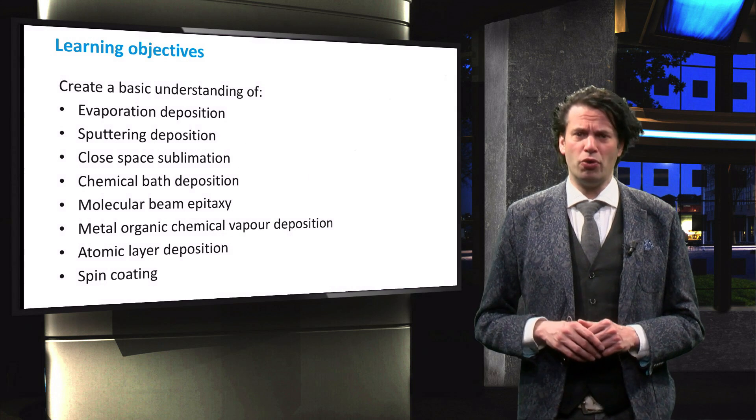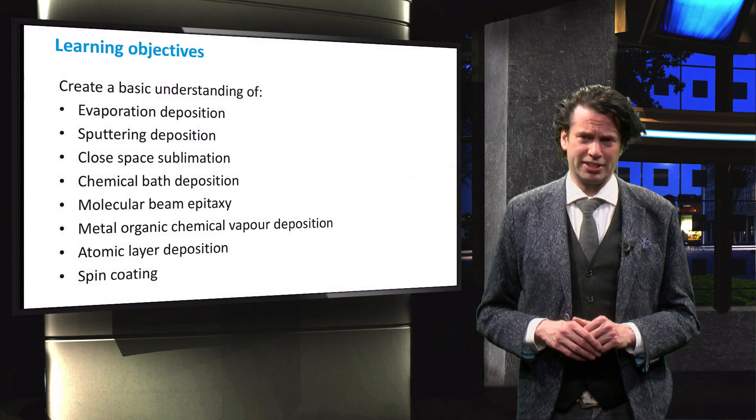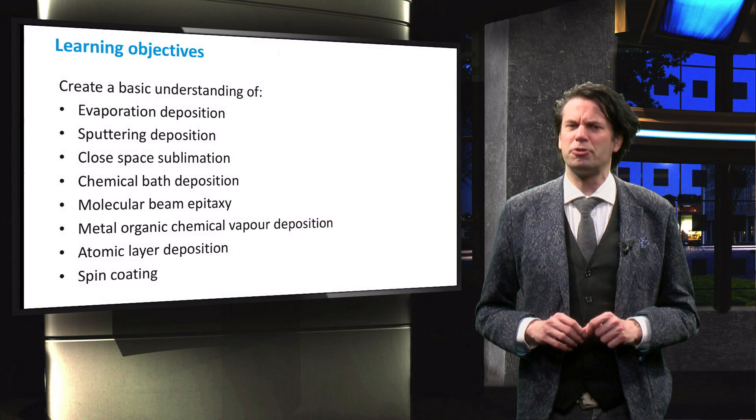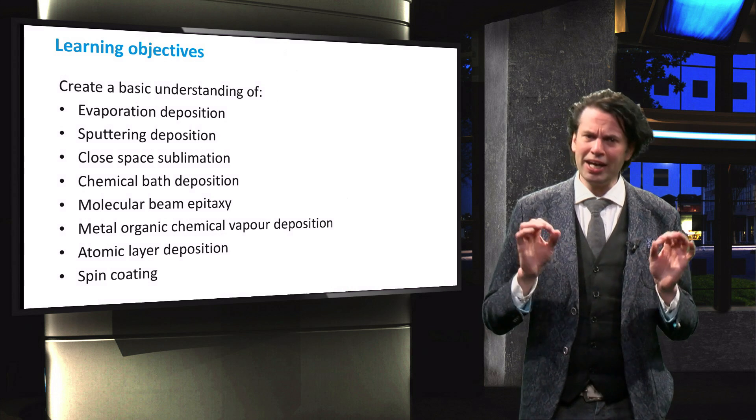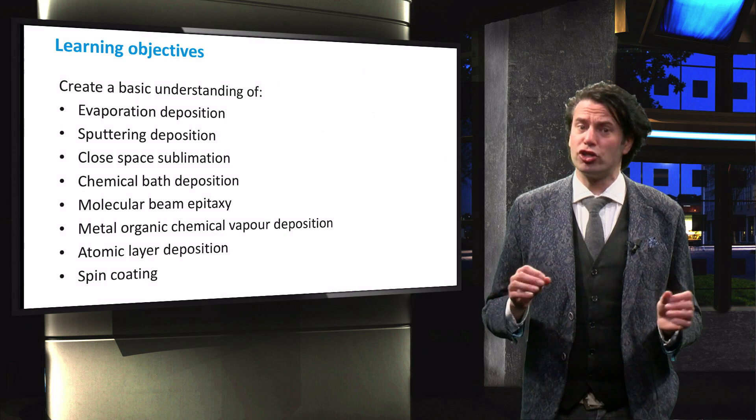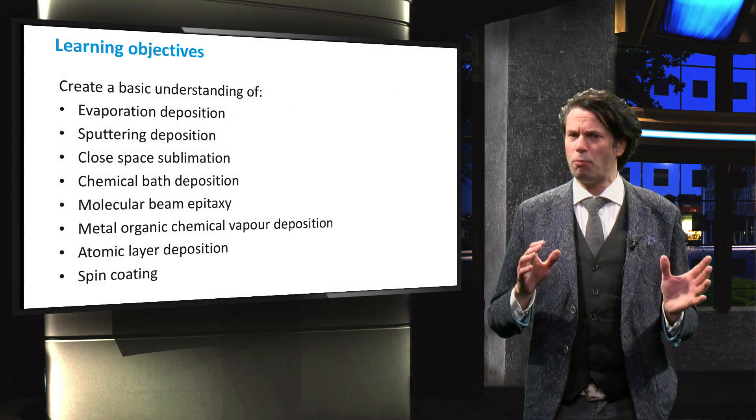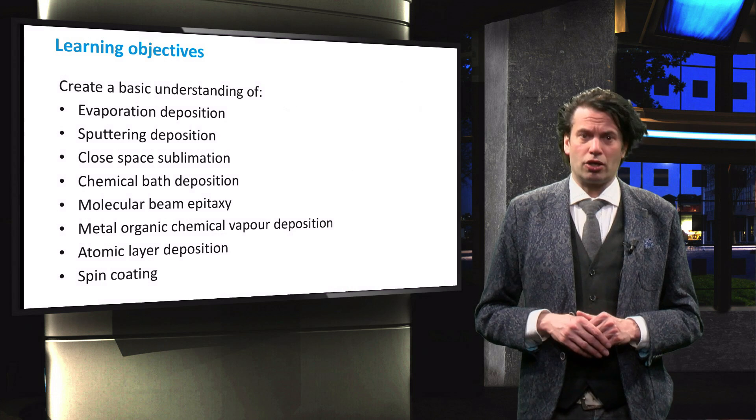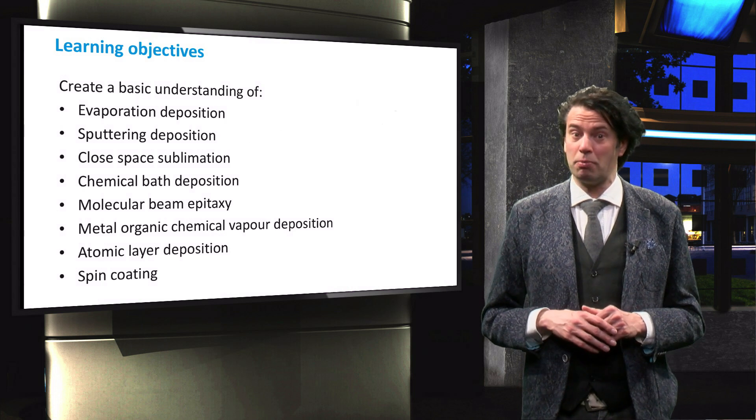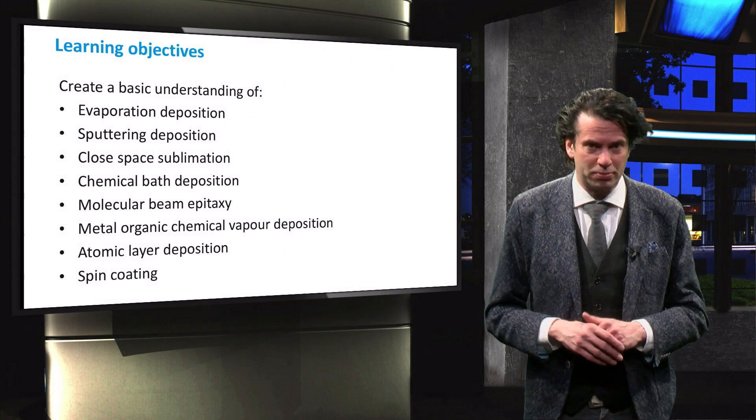In this video and the next, we will discuss 8 more deposition techniques that are of special importance for the thin film technology discussed in this course. These deposition techniques are sputtering deposition and evaporation deposition, which are mostly used for TCOs and metallic layers. Close space sublimation and chemical bath deposition are mostly used for chalcogenides and cadmium telluride technology.